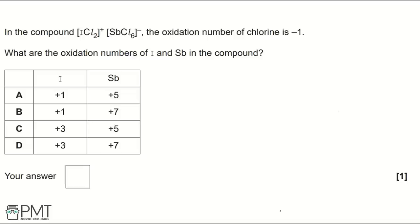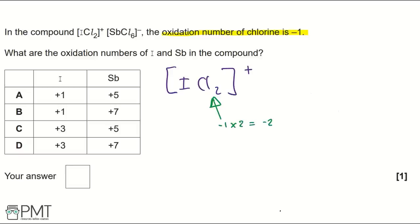Option D: I is +3 and Sb is +7. Taking the cation ICl₂⁺, chlorine has oxidation number −1, so −1 × 2 = −2. The overall charge is +1, therefore iodine must be +3, because +3 − 2 = +1. Looking at our options, it will either be C or D, and we can eliminate A and B.